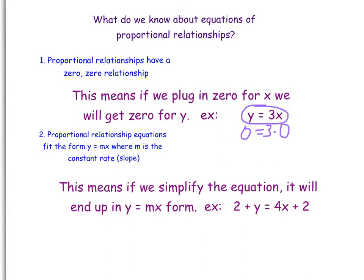I want to show you one that would not be. If we had something like Y equals 3X plus 2, let's say, and we plugged 0 in for Y and 0 in for X, it does not make a true relationship. So, we have to have that 0, 0 relationship.